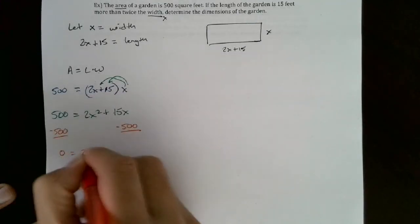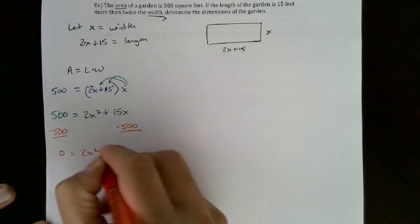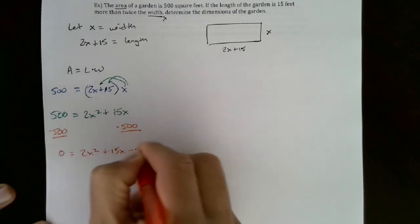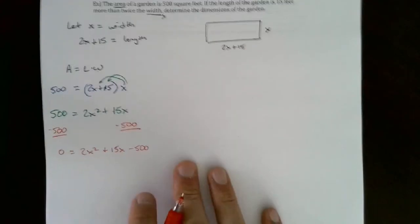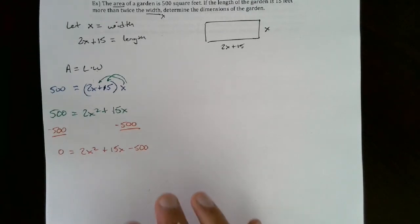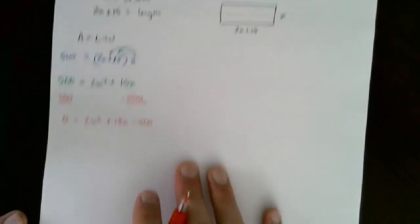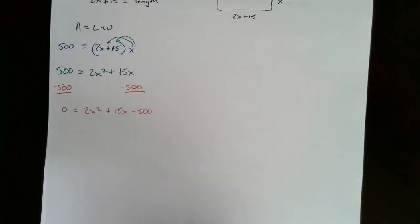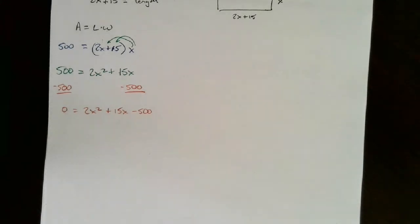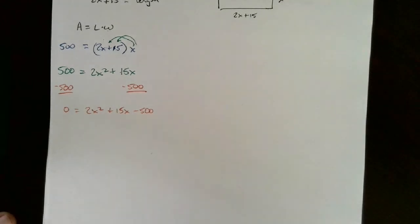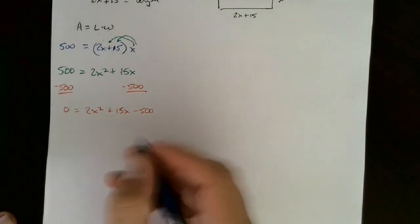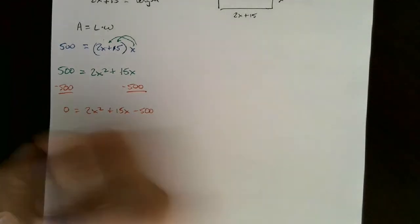Now I want to subtract 500 from each side, because to solve a quadratic you want to get one side equal to zero. So I have 0 = 2x² + 15x − 500. You can solve this by factoring if you think you can do it easily enough, but if you're not sure, use the quadratic formula or complete the square. I'm going to use the quadratic formula right now.